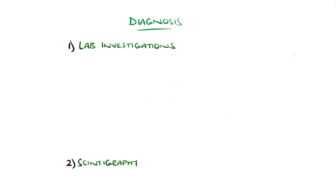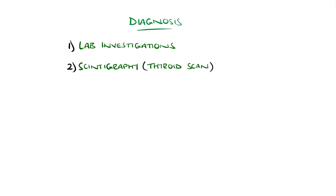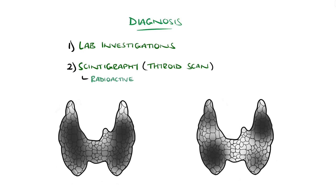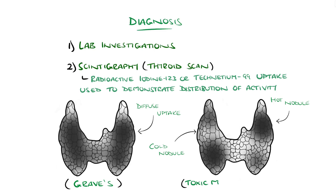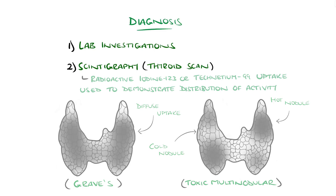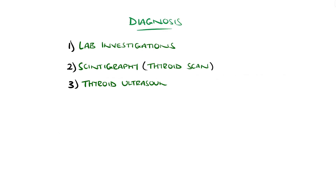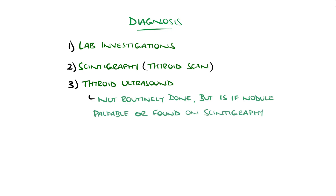Thyroid scintigraphy, also known as a thyroid scan, uses radioactive iodine-123 or technetium-99 to demonstrate the distribution pattern of the radioactive tracer, with diffuse uptake seen in Graves' and patchy, more focal uptake suggesting toxic multinodular goiter. Little uptake is suggestive of thyroiditis or excess exogenous replacement. Thyroid ultrasound is not routinely done, but is done if a nodule is palpable or found on scintigraphy.